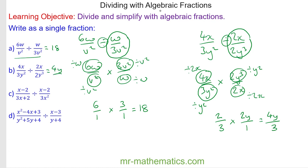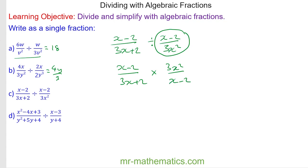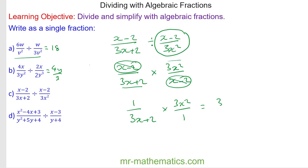Do you want to try question c by pausing the video? Okay, so we change the divide to times, giving x minus 2 over 3x plus 2 multiplied by the reciprocal of the second fraction. There is no common factor of 3x squared and 3x plus 2, so those two will cancel, leaving 1 over 3x plus 2 multiplied by 3x squared over 1, which gives 3x squared over 3x plus 2.